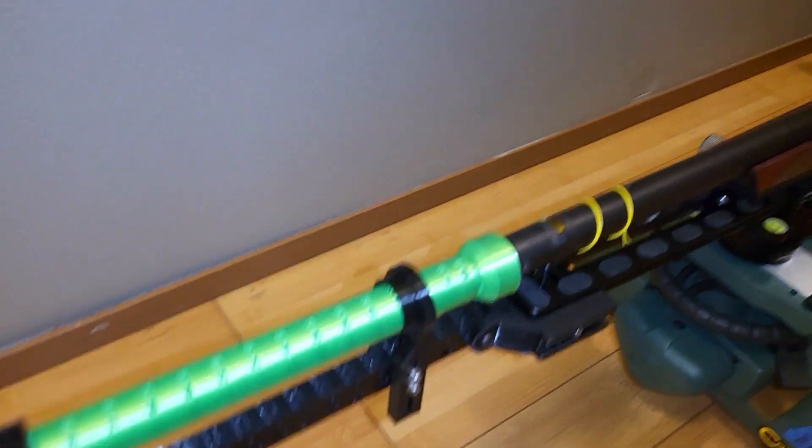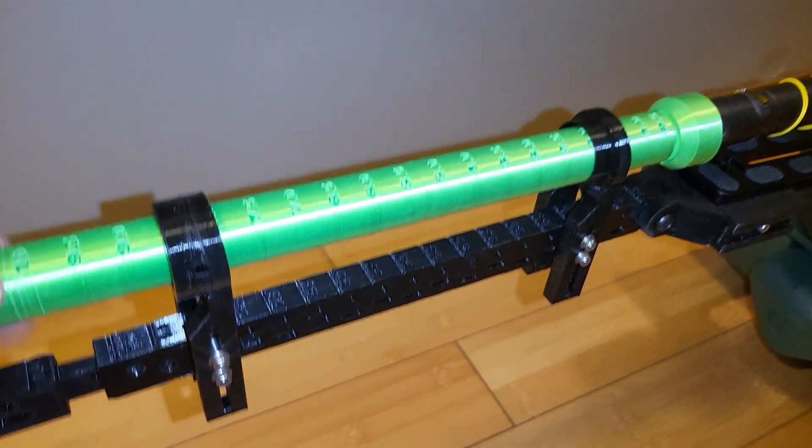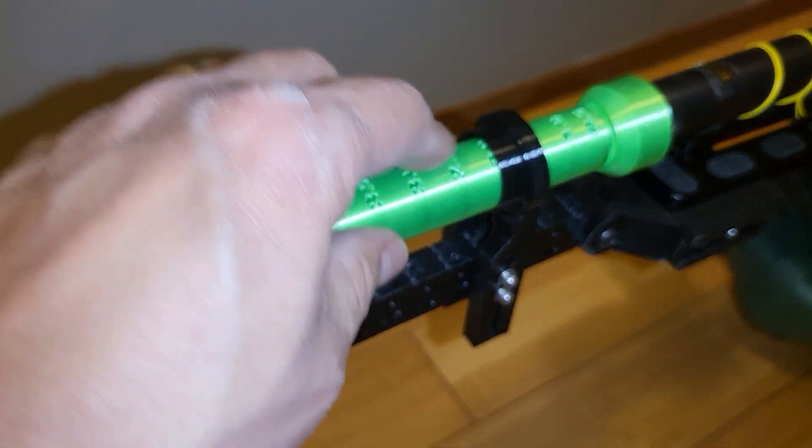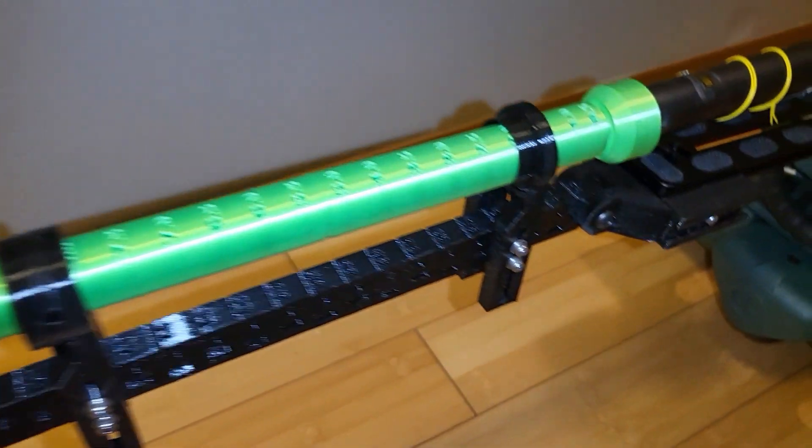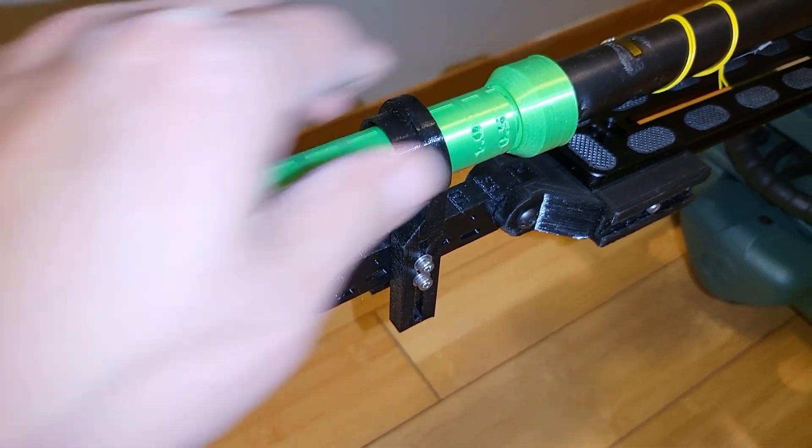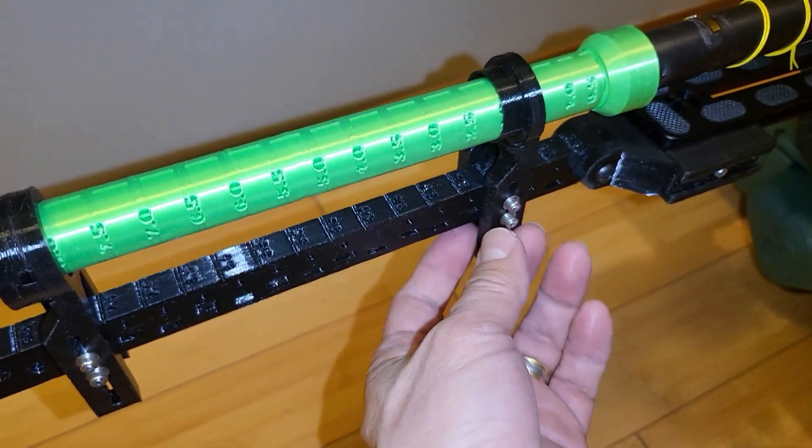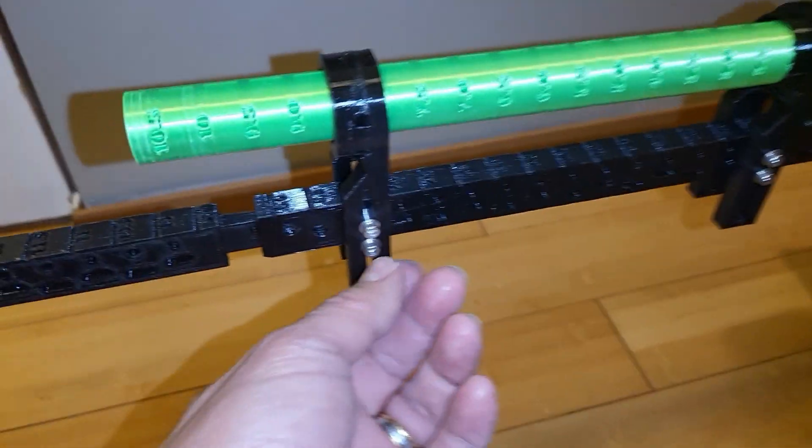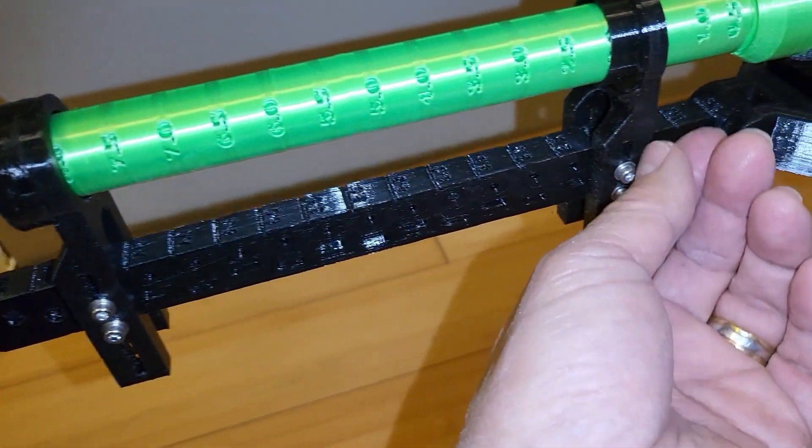So how I install it is first I mount the barrel alignment, the green piece here. Once I install the barrel alignment, then I can align the coil holder to the rail and secure it with these two screws here.